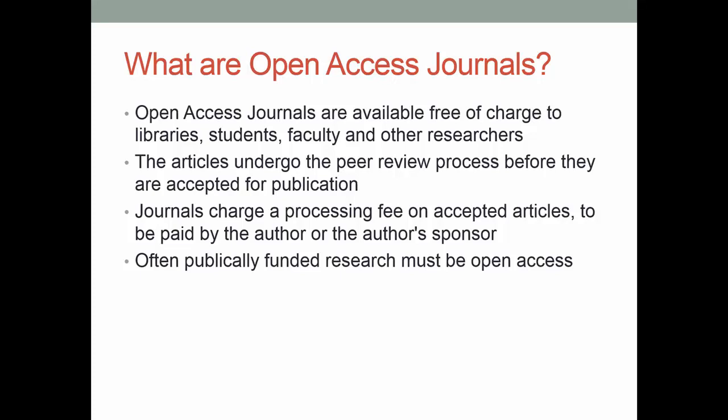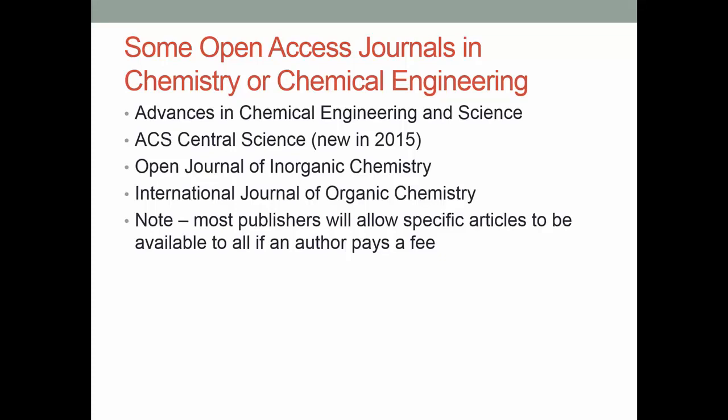Instead of a library paying for the journal, the actual people who are doing the research — after the article is accepted — pay for the article to be published. This is often done through the grant that the professor has. Very often, publicly funded research, especially in the medical area, must be open access. The reasoning is that since the research is supported by tax dollars, the public who pays the taxes should have access to the research. Here are some examples of open access journals in chemistry or chemical engineering.